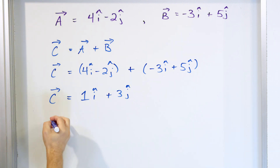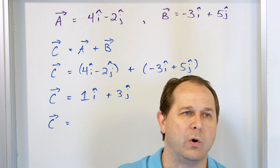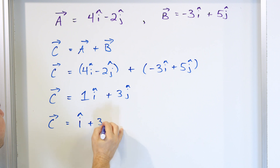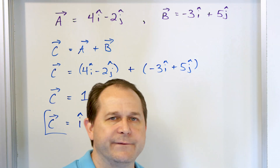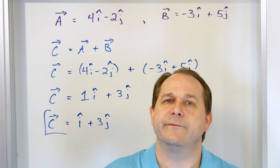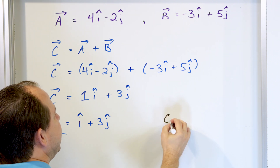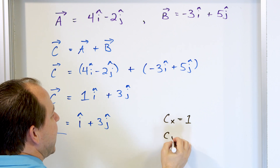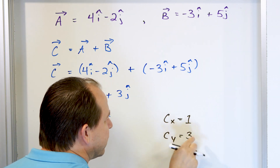That's absolutely correct. Just like in math, we usually don't write a coefficient of 1 in front of a variable — you don't write 1x or 1y — so we can drop it and write this as i plus 3j. Either form is acceptable. If you wanted to spell it out, the x component of C is 1 and the y component is 3. These scalar numbers are the components of the vector.